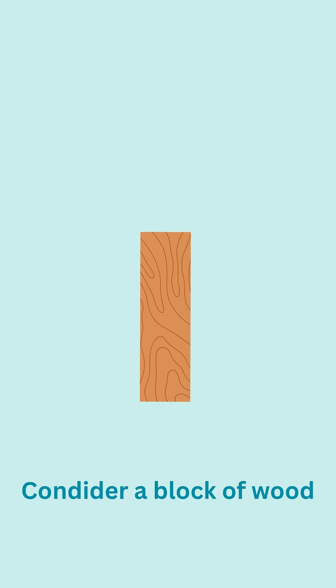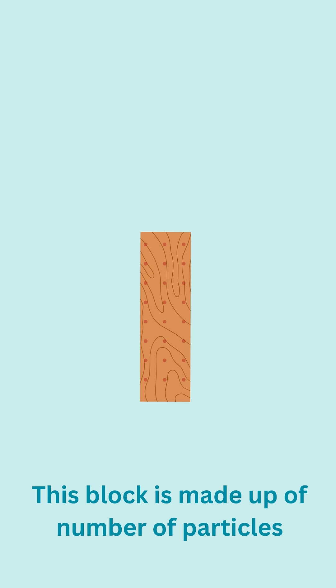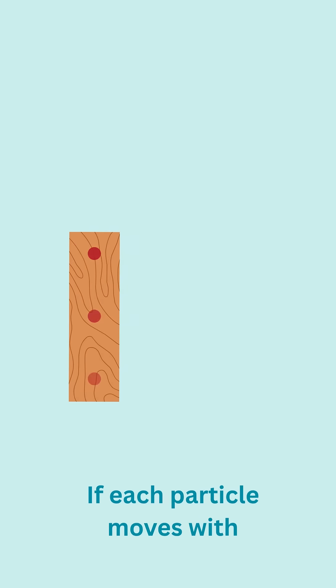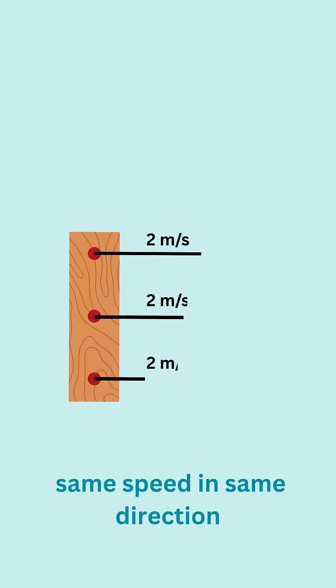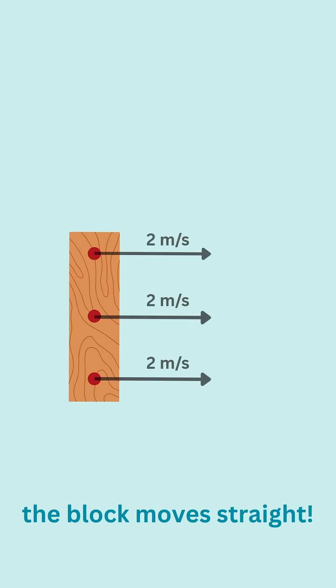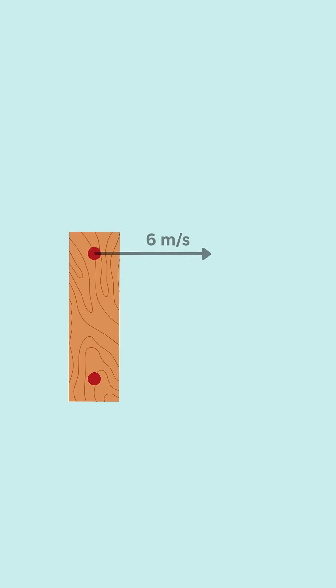Consider a block of wood. This block is made up of a number of particles. If each particle moves with the same speed in the same direction, the block moves straight. If the particle at the top moves with 6 meters per second and the particle at the bottom moves with 2 meters per second, the block moves in this direction.